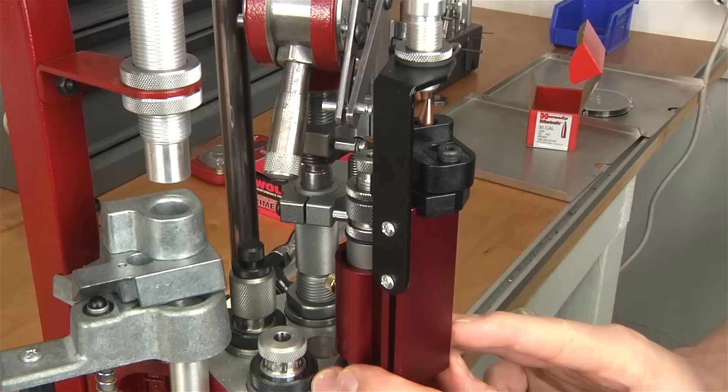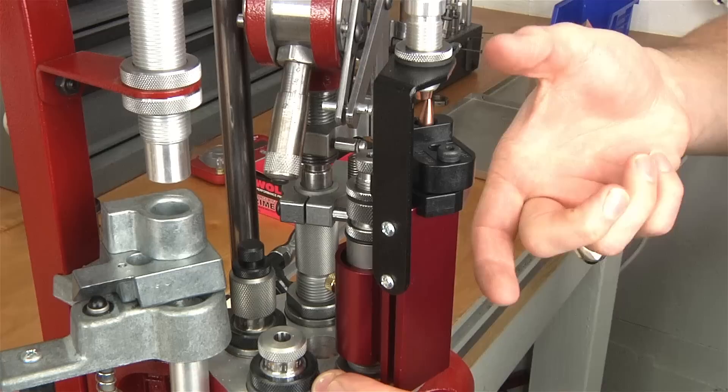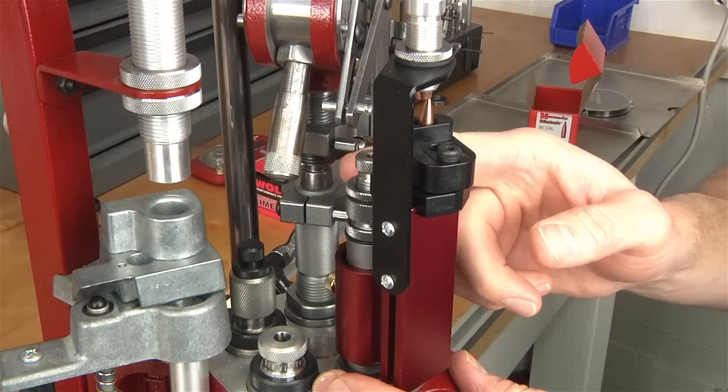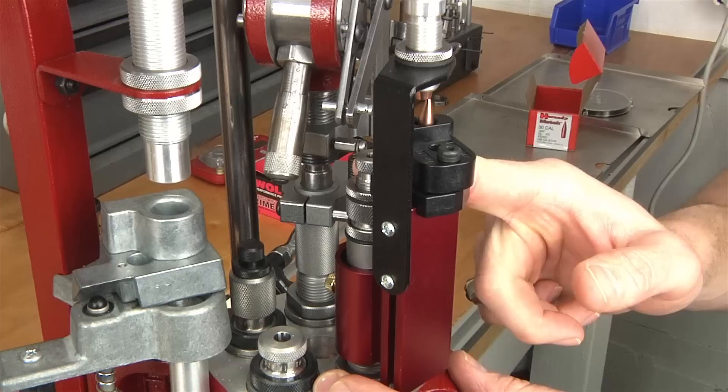The second thing that we're going to need to fine tune is the bullet feed die. You start by installing the die at the appropriate die height. There's instructions for that that come with the press. You're going to also adjust the bullet seat depth and the bullet crimp. The crimp is optional, it depends on how you have the die adjusted.